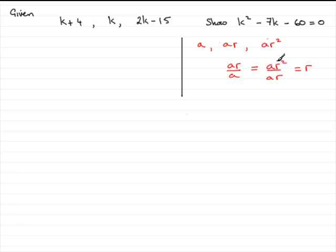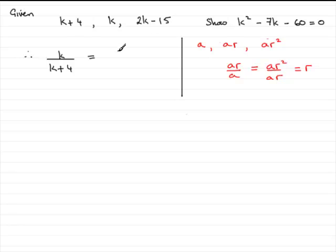It is this idea that we use to find this equation. What we need to do is simply divide any term by its previous term, and that will be the common ratio. So k over k plus 4 must equal this term, 2k minus 15, divided by its previous term, k.